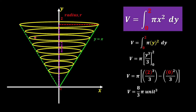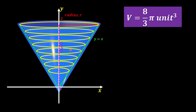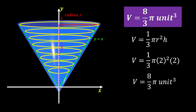This answer tells us that the volume of this solid is eight-thirds pi unit cubed. We can verify this by finding the volume of a cone using the formula one-third pi r squared h. Our radius is 2, because when y equals 2, x is also equal to 2. Substituting into the formula: one-third times pi times 2 squared times the height of 2. That gives 2 squared equals 4, 4 times 2 equals 8, and 8 times one-third equals eight-thirds pi. We have the same answer — because when we revolve around the y-axis, we are forming a solid cone.